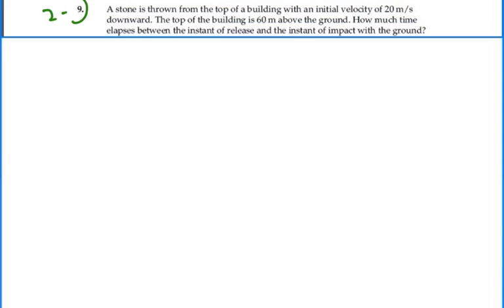Take a look at problem 2.9. A stone is thrown from the top of a building with an initial velocity of 20 meters per second, downward. The top of the building is 60 meters from the ground. How much time elapses between the instant of release and the instant of impact with the ground?